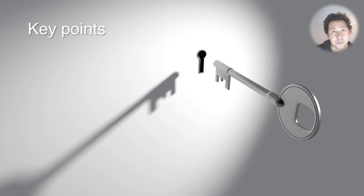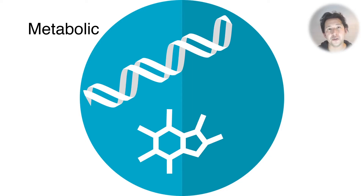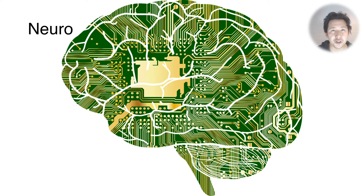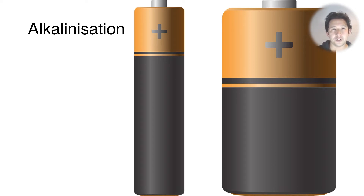The key points to this video are as follows. One, aspirin is a lethal overdose. Number two, it exerts its lethal effects via the metabolic system and the neurological system. And number three, the mainstay of the treatment is alkalization of the urine.